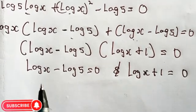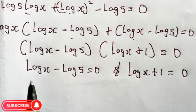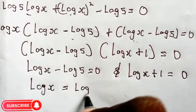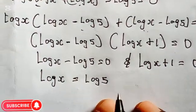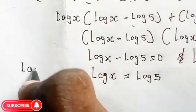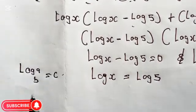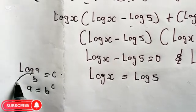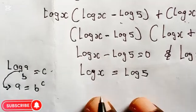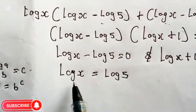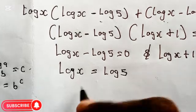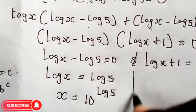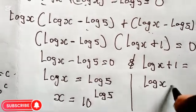This implies log x minus log 5 equals 0, and also log x plus 1 equals 0. Solving Case 1: log x minus log 5 equals 0, collecting like terms gives log x equals log 5, therefore x equals 5.